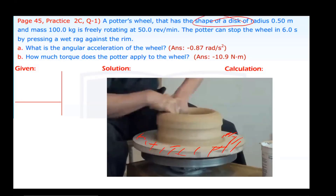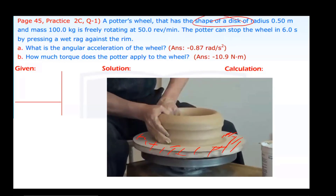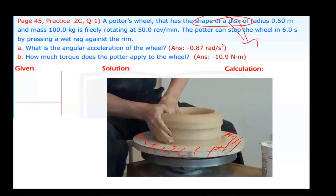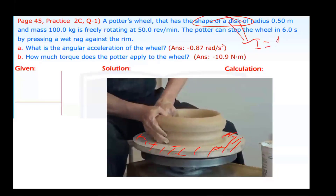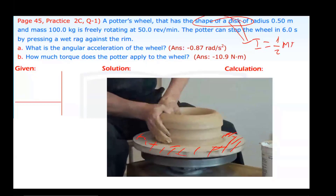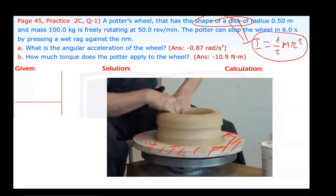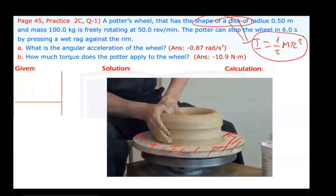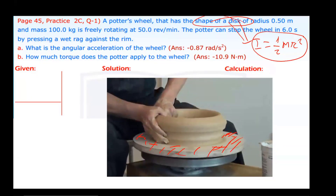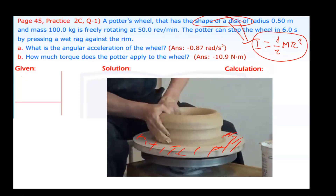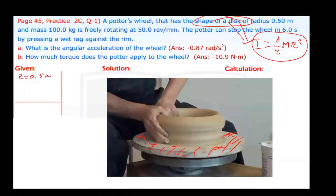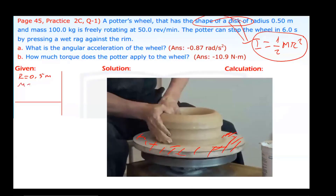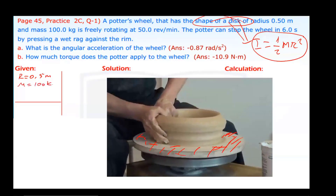We need this because it's a disc shape. I know the equation for moment of inertia of the disc. Moment of inertia of the disc is 1 over 2 times m times r squared. I will use this equation for calculating moment of inertia. Radius is 0.5 meters. Mass of this potter's wheel is 100 kilograms.